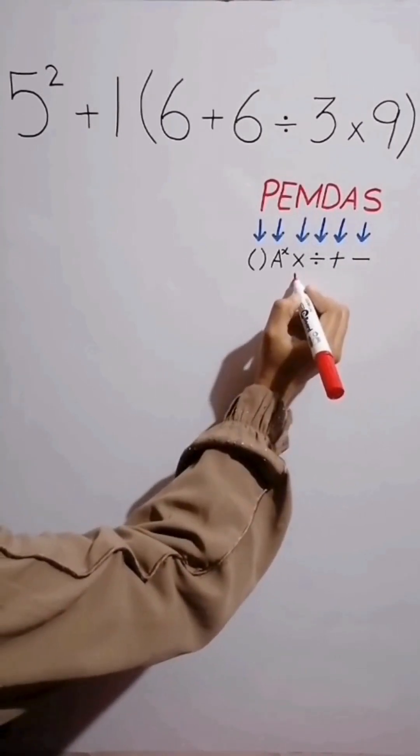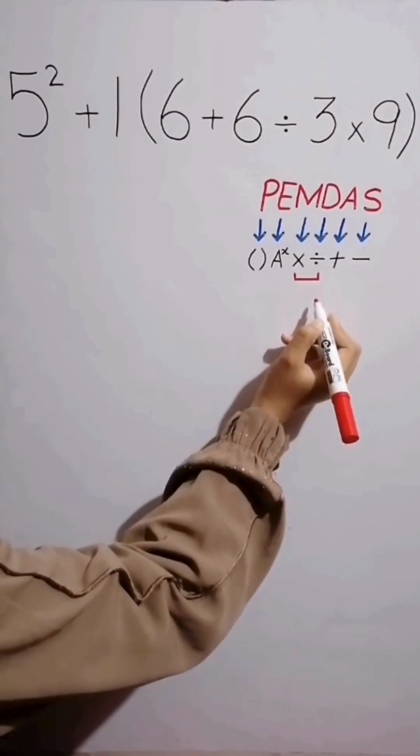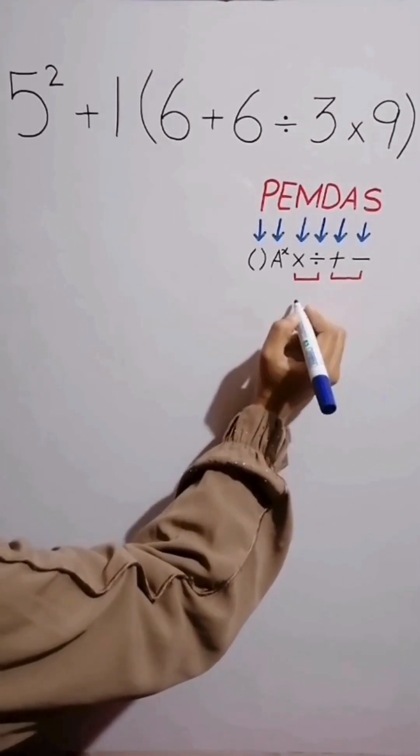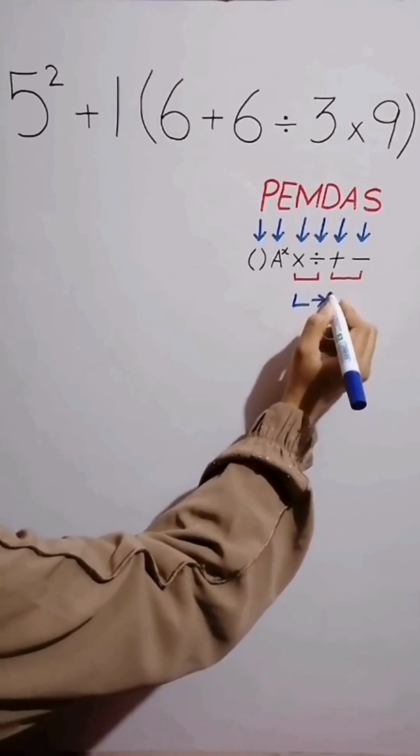Multiplication and division have the same level of priority. Also, addition and subtraction have the same level of priority. When we have both in an expression we start from the left and simplify the question.